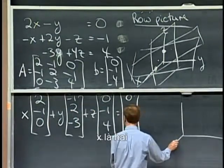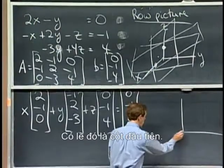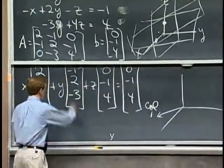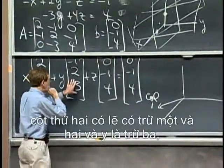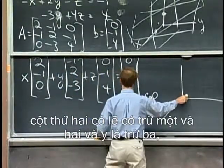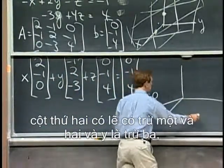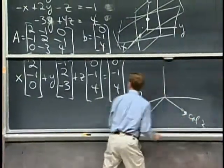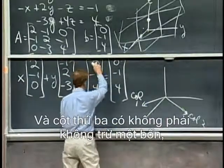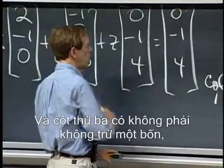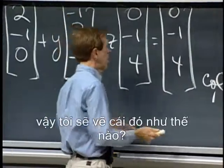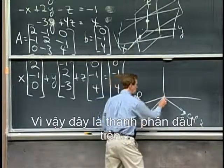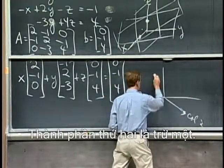So x is 2 and y is -1. Maybe there's the first column. The second column has maybe a -1 and a 2 in the y's, and -3's, somewhere there possibly, column two. And the third column has no zero, -1, 4. So how shall I draw that? So nothing in, this was the first component. The second component was a -1, maybe up here.